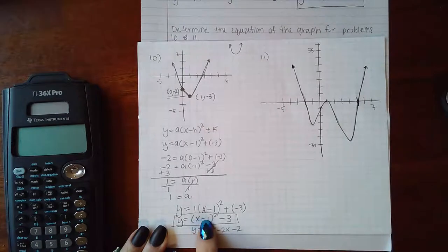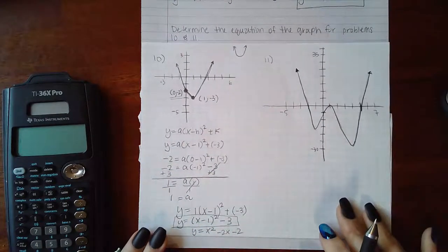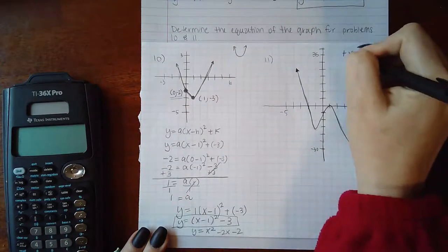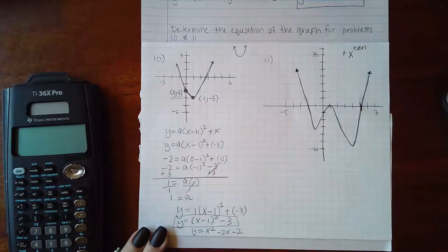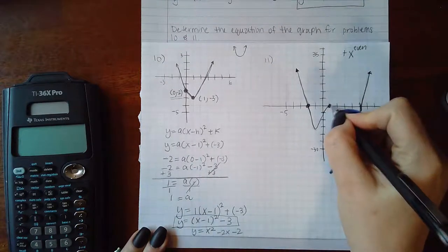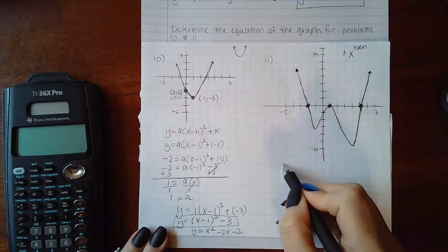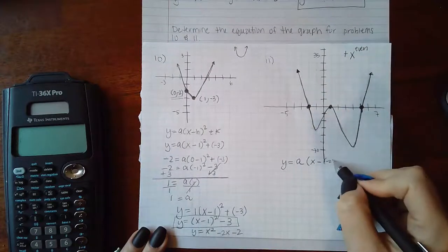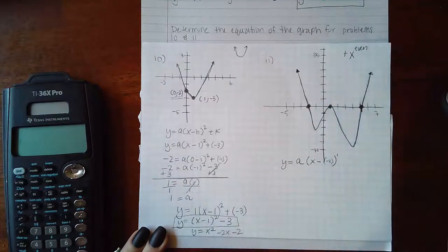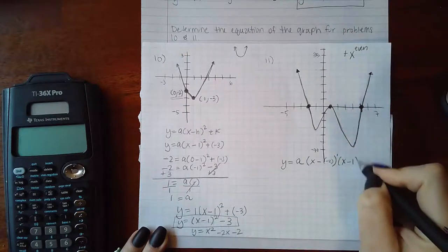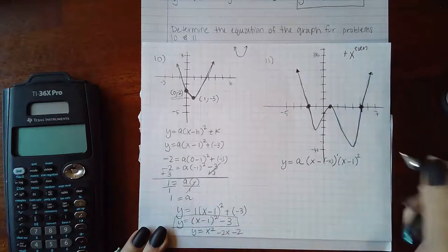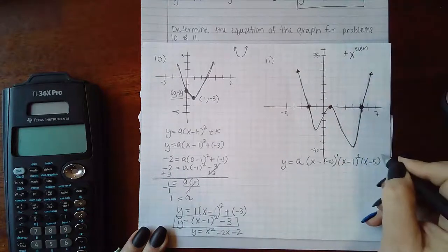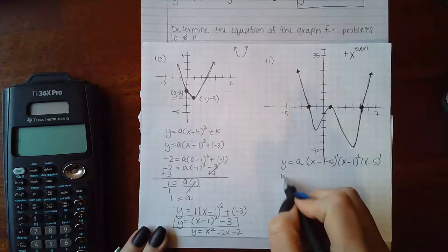For number 11, that one looks like a polynomial graph. I do see it's going upward, so I know it's going to have a positive coefficient with an even exponent. I have some zeros here, so I have x intercepts at negative 2, 1, and 5. My equation is going to be y equals some coefficient and then x minus a negative 2 with multiplicity of 1, then x minus 1 with multiplicity of 2 since it bounces, and then x minus 5 with multiplicity of 1 since it goes through.